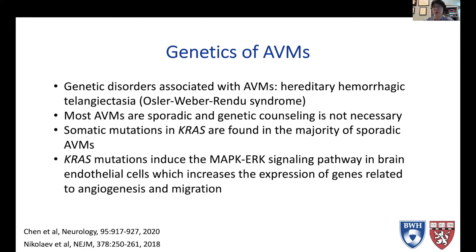HHT is a rare autosomal dominant disorder where vascular abnormalities can occur in the skin, the mucous membranes, the liver, the lungs, and the brain. Patients with HHT can have multiple AVMs and can even develop new AVMs after birth — there are case reports of patients developing new ones on repeat angiography. This is not typical of most AVMs. Most AVMs are sporadic, genetic counseling is not necessary, and most people have only a single solitary AVM.